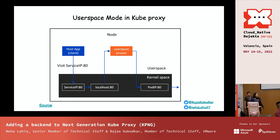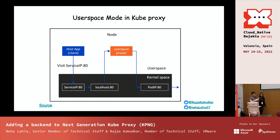This kernel-to-user-space-to-kernel switching is not the preferred method, which is why we've moved to IP tables and IPVS and user space is deprecated. Let's see how this backend can be added in KPNG. A shout out to Arthur — this diagram is from his blog post on understanding user space and other modes in kube-proxy.